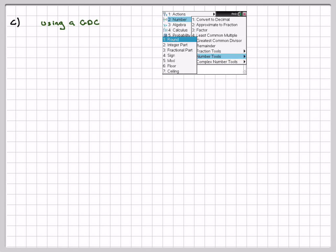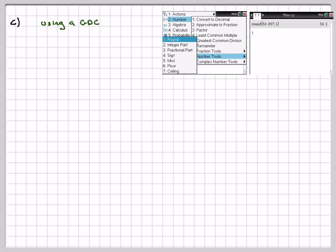So there are a couple of screenshots just to show you what we've done. Therefore, the answer: 56.057 equals 56.1 to one decimal place. So this is how to use your GDC.